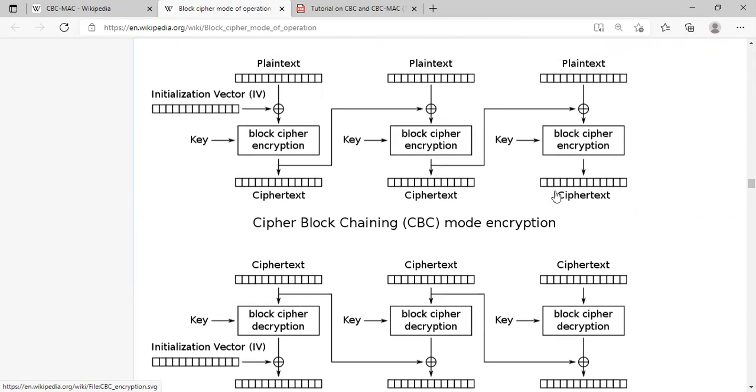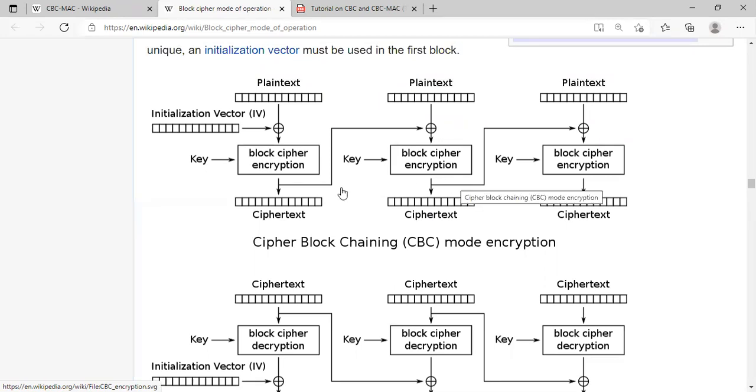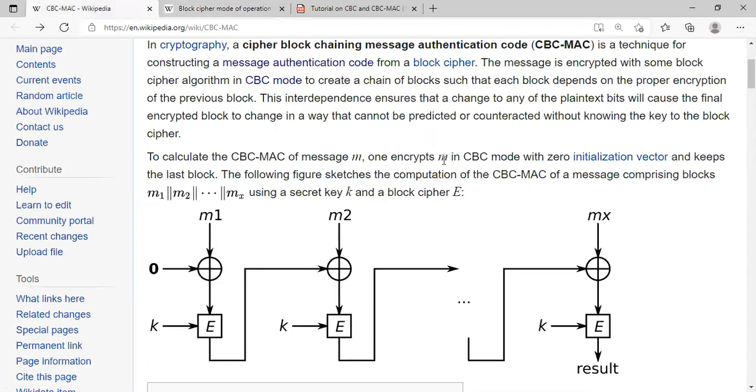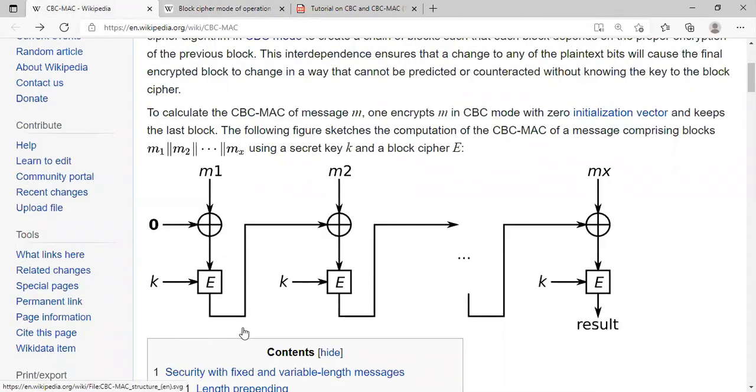We have talked about encryption and decryption process earlier, but the point is that the ciphertext is sent in cleartext from one end to another end. But if you now go back to CBC-MAC, you don't see the ciphertext sent to the receiver.